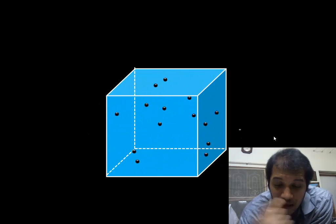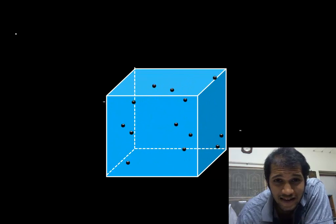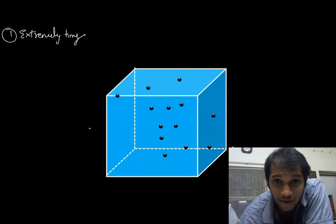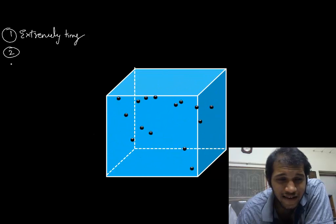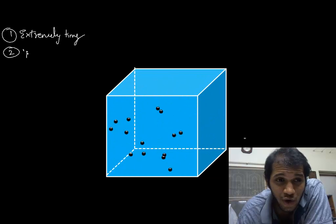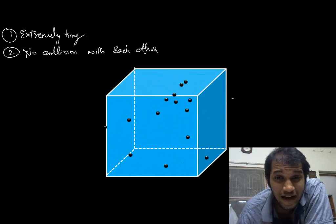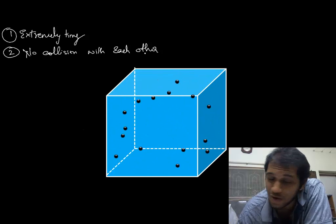Let's state the assumptions. The first assumption is that these molecules are very tiny — extremely tiny. That's not a bad assumption; you can't even see them with microscopes, so it's accurate. The second assumption is that these molecules or atoms are not going to collide with each other — no intermolecular collisions. In reality they do collide, but our final answer will be unaffected regardless of whether we consider those collisions or not.